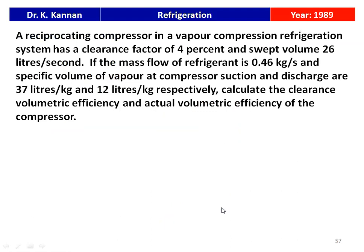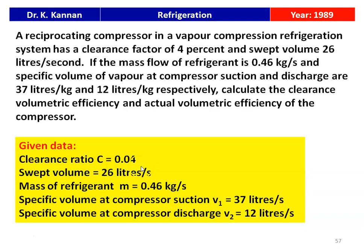The next question is from the 1989 question paper. A reciprocating compressor in a vapor compression refrigeration system has a clearance factor of 4% and a swept volume of 26 liters per second. The mass flow rate of the refrigerant is 0.46 kg/s, and the specific volume of the vapor at compressor suction and discharge are 37 liters/kg and 12 liters/kg respectively. Calculate the clearance volumetric efficiency and actual volumetric efficiency of the compressor.